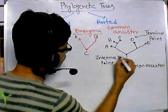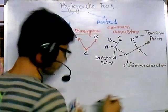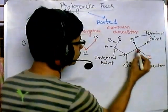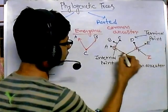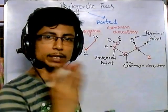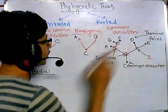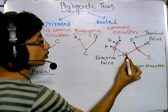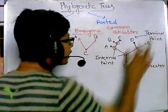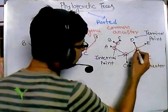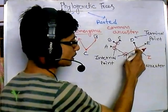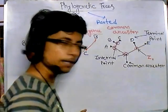The second type of point is called the internal point. Internal points are the points from where divergence occurs — so at each internal point we can see divergence. Terminal points are present at the terminal region of the phylogenetic diagram. In a rooted tree, from the common ancestor it branches, and from each internal point another branching occurs. When two things come from a point, those two species share a common ancestor.